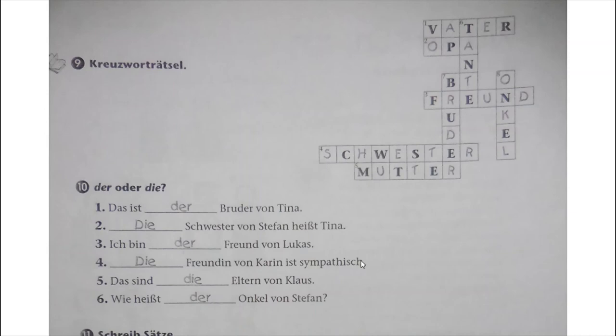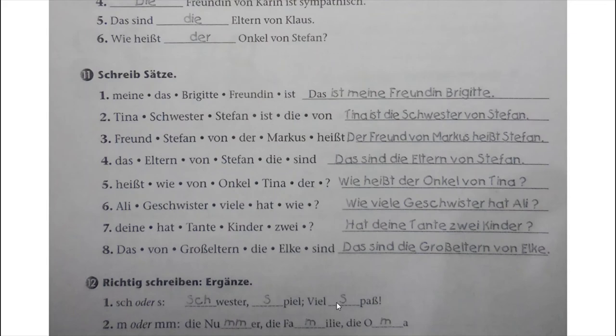Das sind die Eltern von Klaus - plural, so 'die'. Wie heißt der Onkel von Stefan - masculine. Then Nummer 11: Schreib Sätze - we have to write down the correct sentence with jumble words and put the correct punctuation. Number 1: Das ist meine Freundin Brigitte. Nummer 2: Tina ist die Schwester von Stefan. Nummer 3: Der Freund von Markus heißt Stefan.